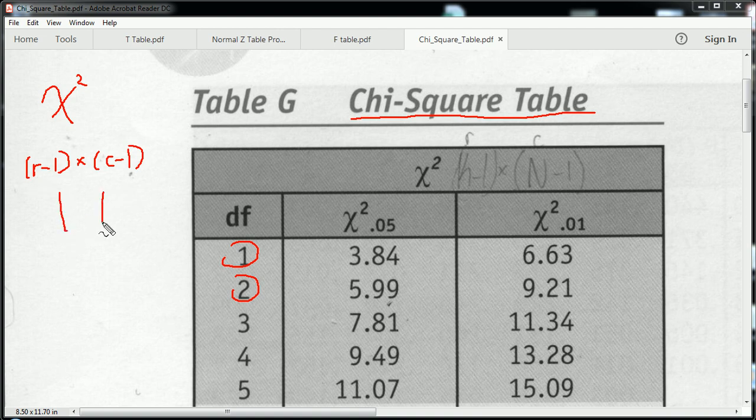By the way, the rows and columns of your contingency table. So here I have two rows, three columns, so my degrees of freedom would be 1 times 2. So that would be 2 degrees of freedom, and I'd be here.